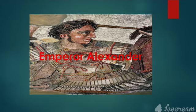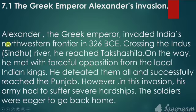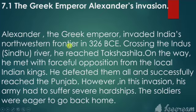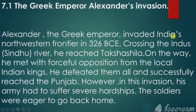Now, section 7.1 covers the Greek Emperor Alexander's invasion — his dream to conquer the world. Alexander the Greek emperor invaded India's north-western frontier in 326 BCE. Here, 'frontier' means a border between two countries.